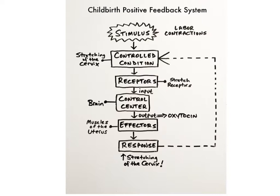A common example of a positive feedback system is childbirth. The first labor contractions of childbirth push the baby's head into the mother's cervix, which is the lowest part of the uterus, or womb. These labor contractions act as the stimulus that increases the stretching of the cervix, which is the controlled condition.